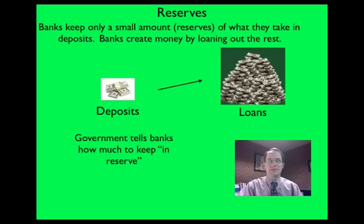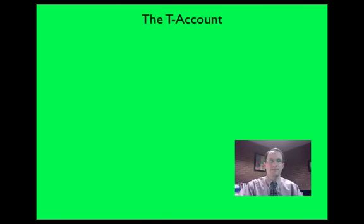Governments tell banks how much to keep in reserve, sometimes known as the reserve ratio, which is right now around 10%. In order to understand how banks create money for the money supply, let's use something called a T-account.